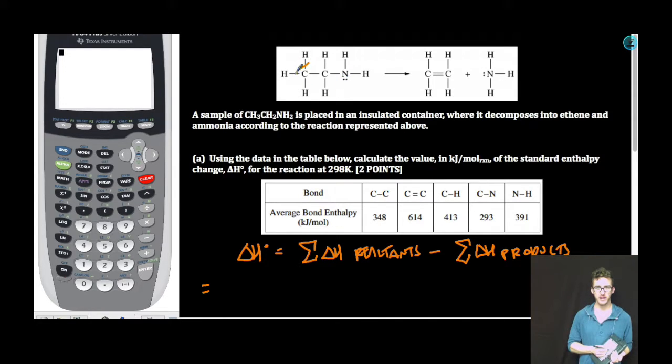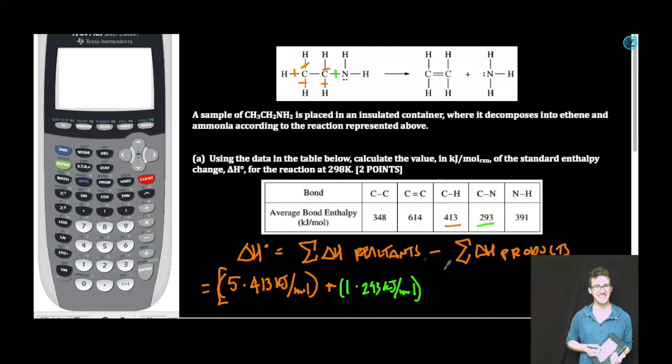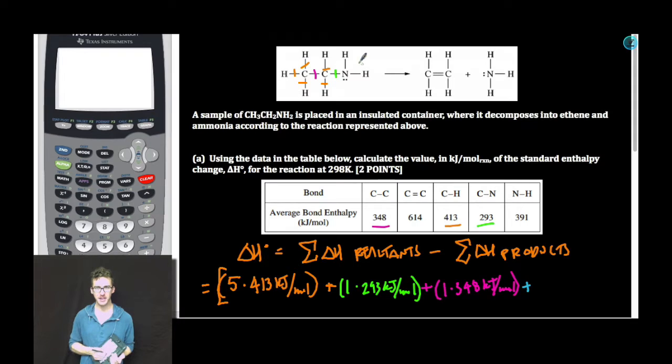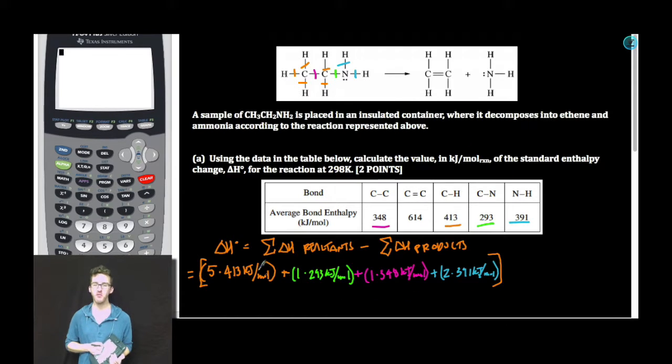I've got five carbon hydrogen bonds in my reactants, or five moles of carbon hydrogen bonds. We're going to add to that one mole of carbon nitrogen bonds, one mole of carbon carbon bonds, and two moles of nitrogen hydrogen bonds. So that's all of my reactant bond enthalpies. I'm going to subtract from that the sum of all my product bond enthalpies.